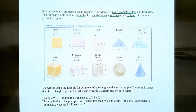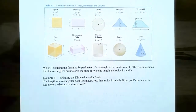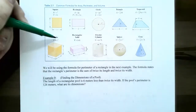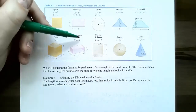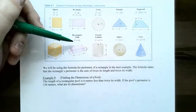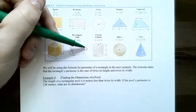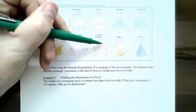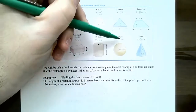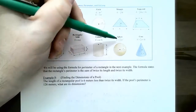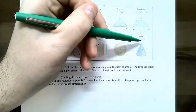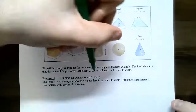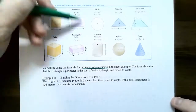For three-dimensional shapes: a cube has volume S cubed. A rectangular solid (box) has volume equals length times width times height. A circular cylinder has volume equals πr squared times height. A sphere has volume equals four-thirds times π times radius cubed. A cone has volume equals one-third times πr squared times height. In the next problem, we'll deal with the perimeter of a rectangle: 2L plus 2W.